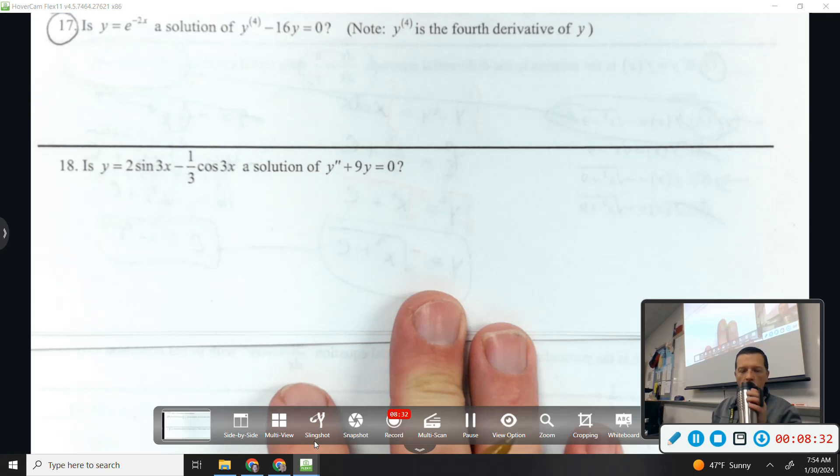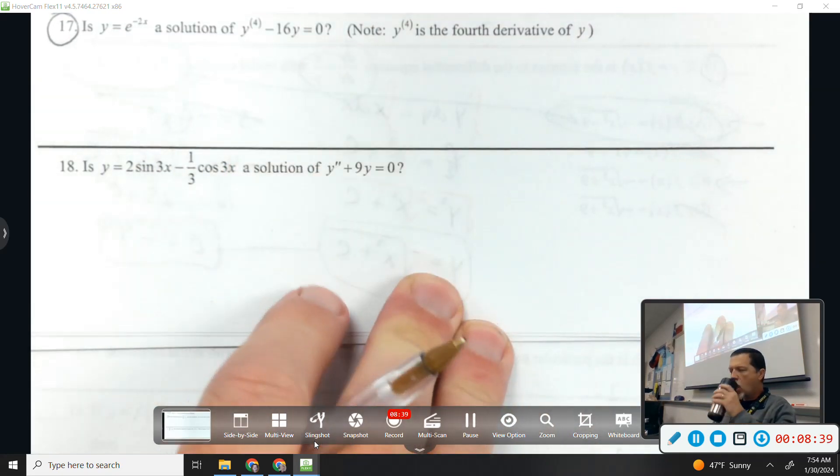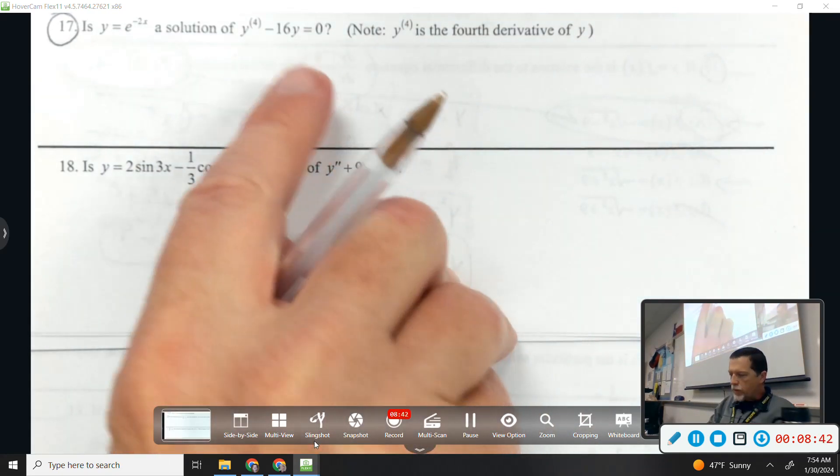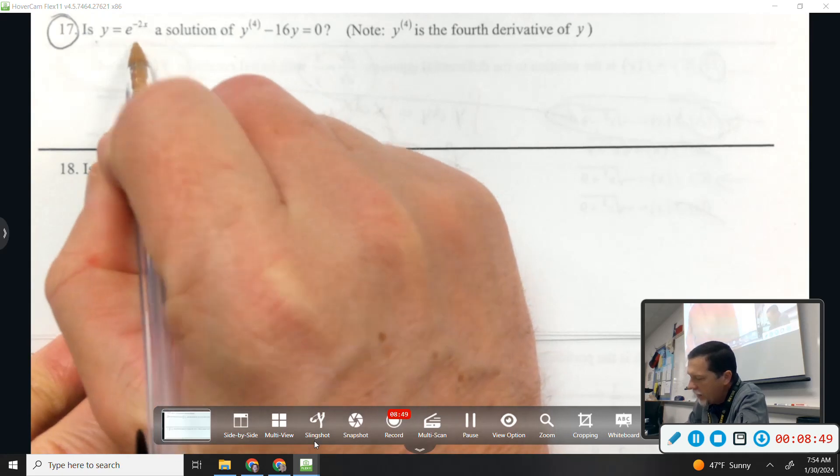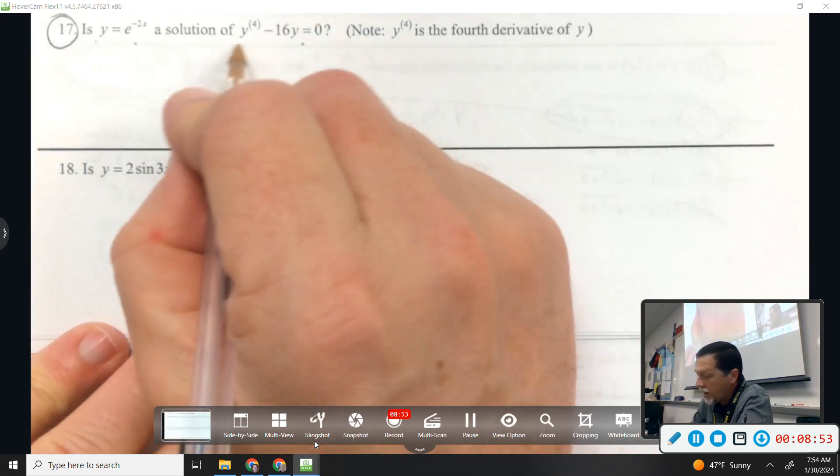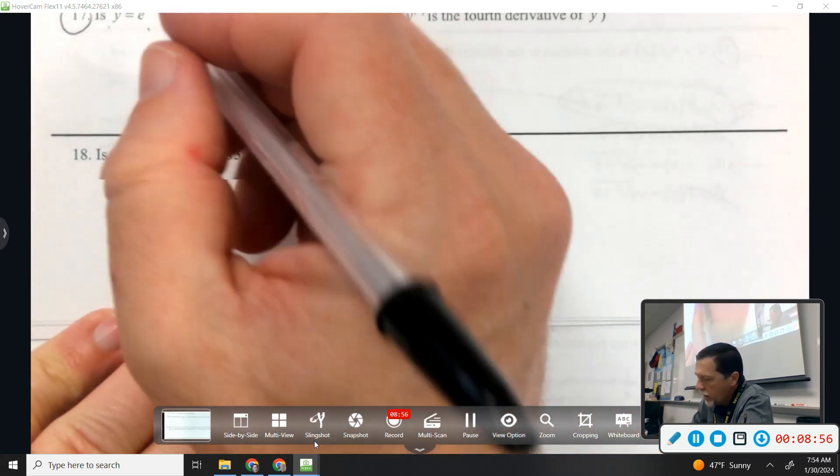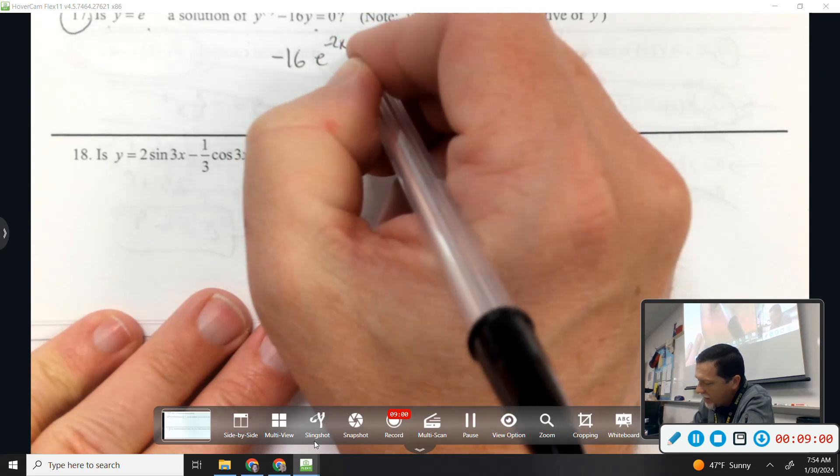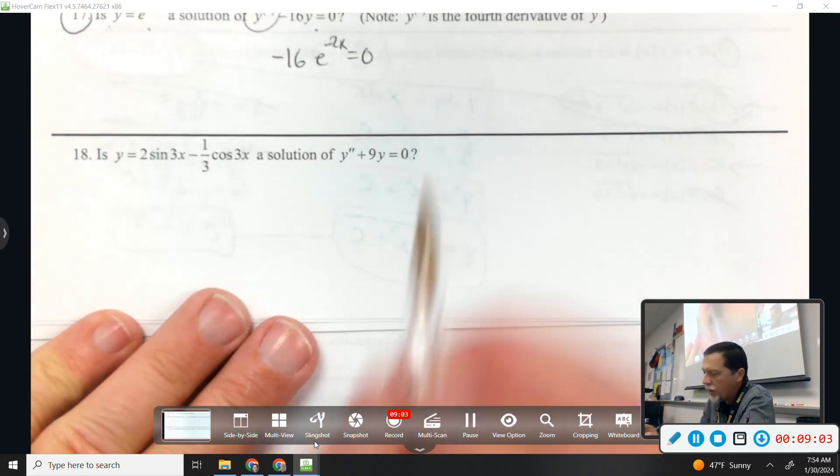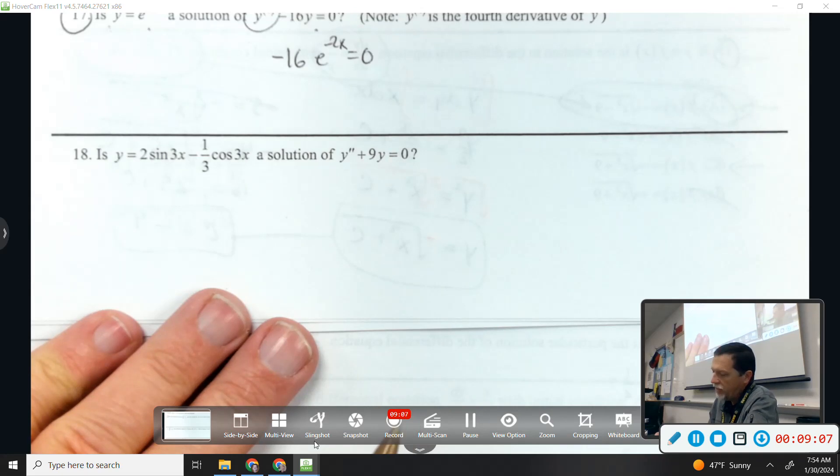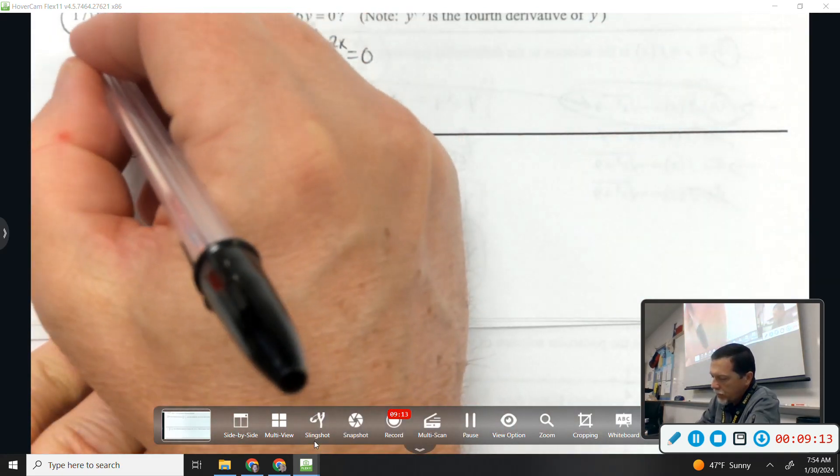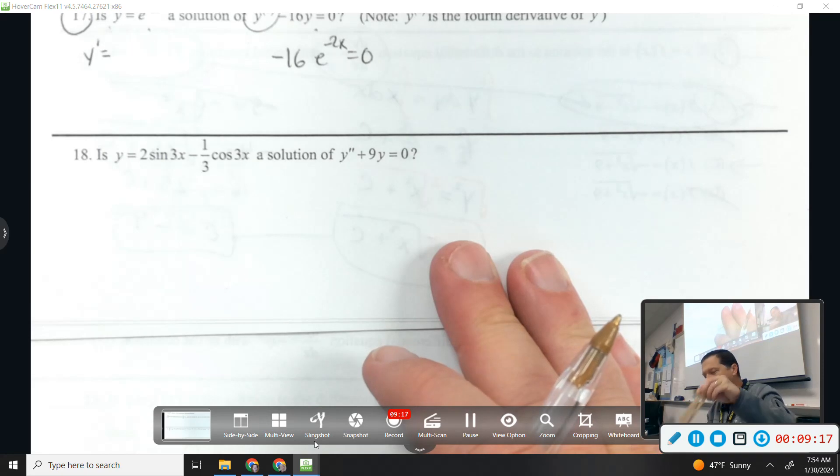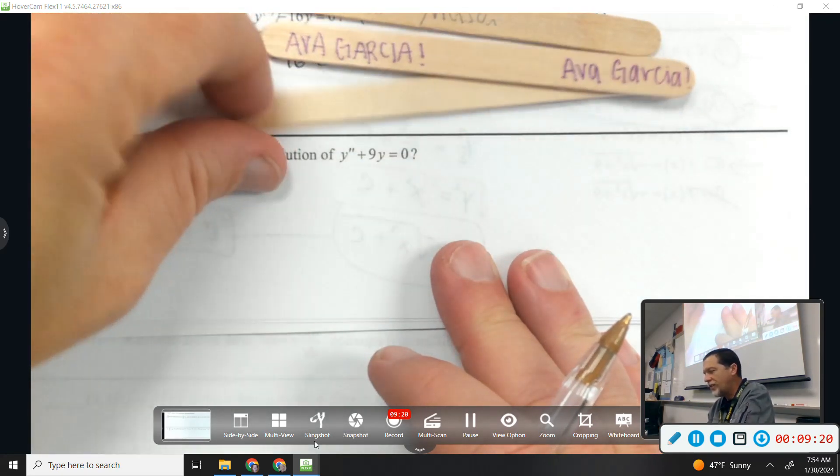All right, last one I want to do is number 17. Is that a solution to this? Or y-fourth is the fourth derivative. So I want to check and see if this is a solution to this. So I need to plug into this and see if it's true. Well I know what y is, that's e to the negative 2x. How can I figure out what the fourth derivative of y is? Well there's not a magical way to get there, so we'll just call on four people and see if we can make it all the way.